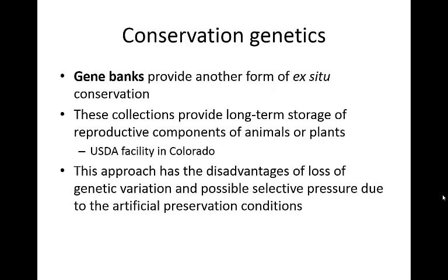Gene banks are another form of ex situ conservation — places where you literally take genetic samples of different organisms and save them, maybe frozen at minus 80 degrees Celsius. These collections can provide long-term storage of reproductive components of animals or plants. There's a USDA facility in Colorado that saves many different types of seeds from all different organisms, so if some catastrophe were to happen, we'd have backup supplies. The disadvantage of this approach is loss of genetic variation, as well as possible selective pressure for organisms that survive under those particular storage conditions.